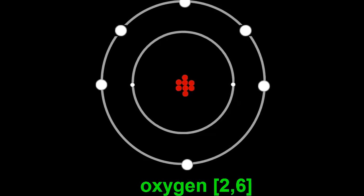Oxygen has an atomic number of 8, which means it has 8 protons in its nucleus and 8 electrons in its two shells. 2 electrons in the first shell, and 6 in the second shell.